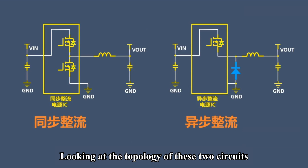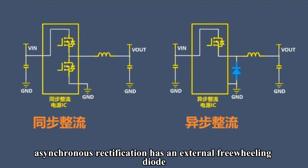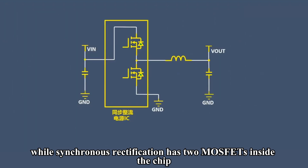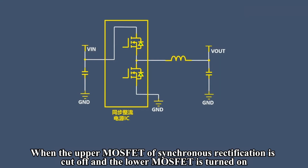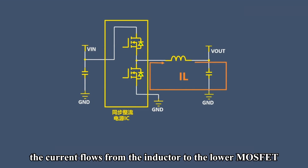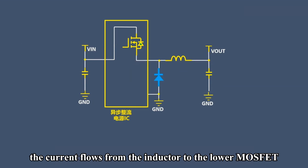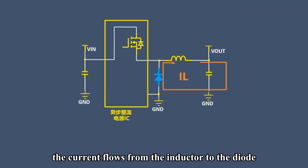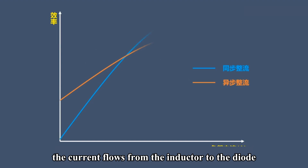Looking at the topology of these two circuits, asynchronous rectification has an external freewheeling diode, while synchronous rectification has two MOSFETs inside the chip. When the upper MOSFET of synchronous rectification is cut off and the lower MOSFET is turned on, the current flows from the inductor to the lower MOSFET. When the upper MOSFET of asynchronous rectification is cut off, the current flows from the inductor to the diode.